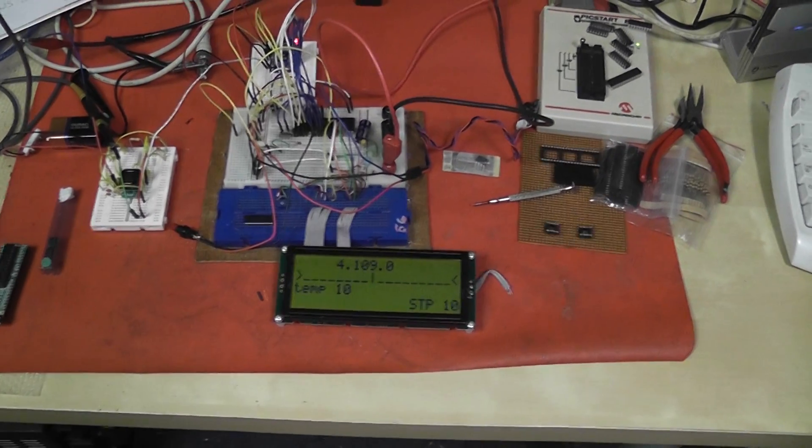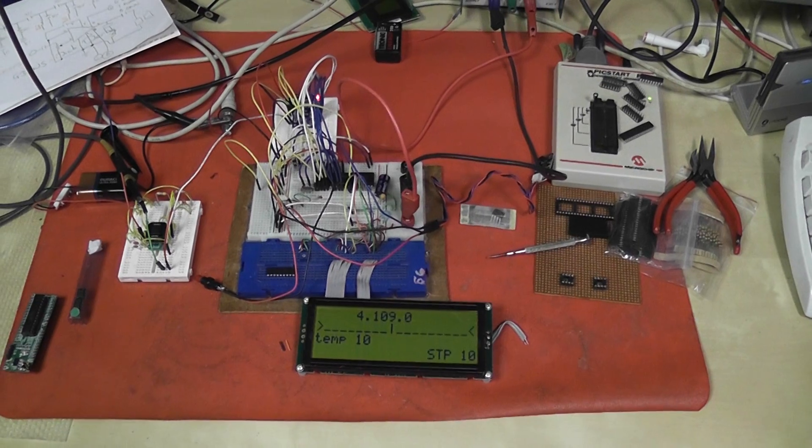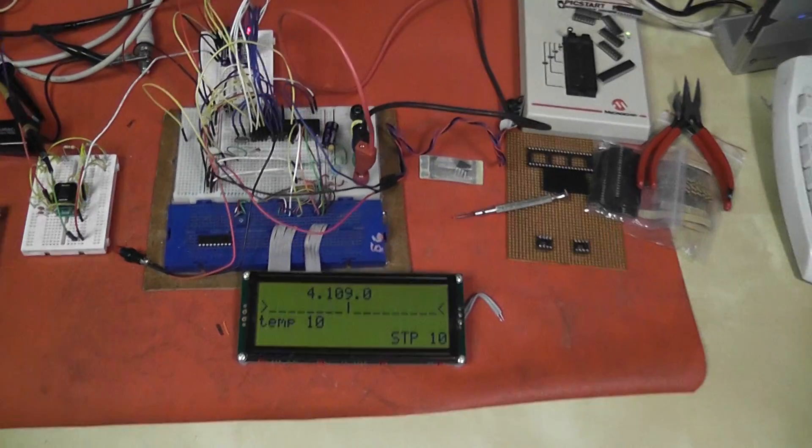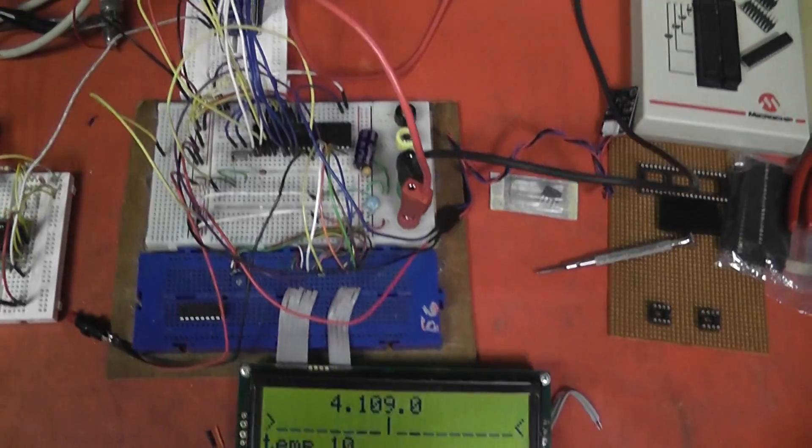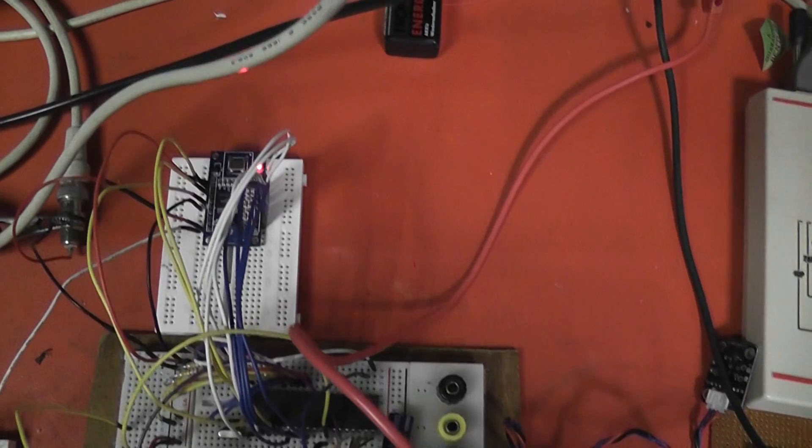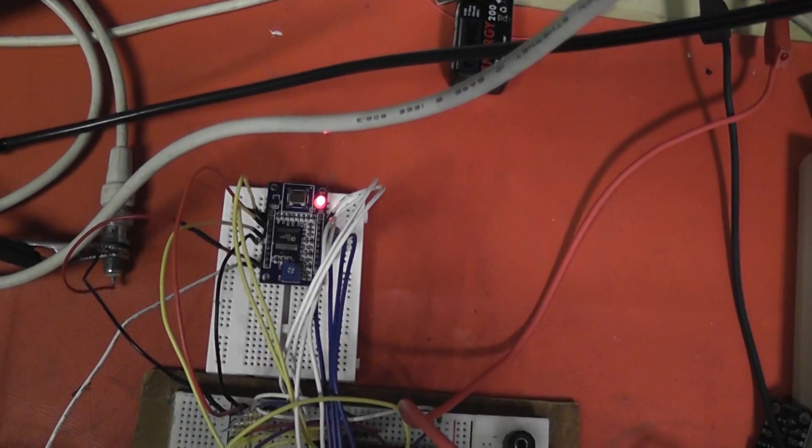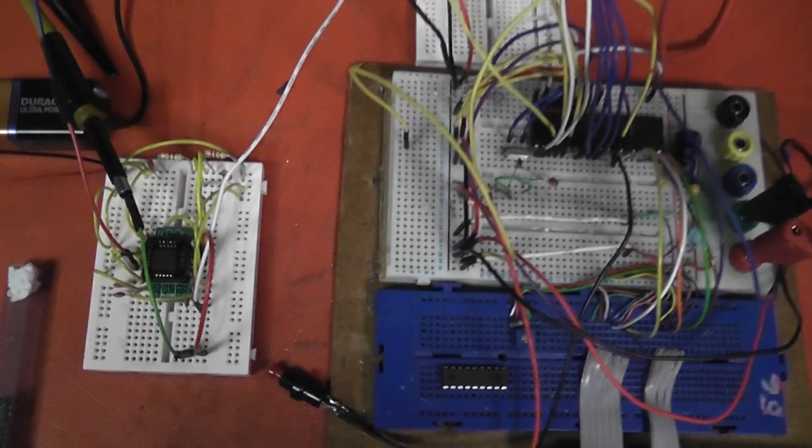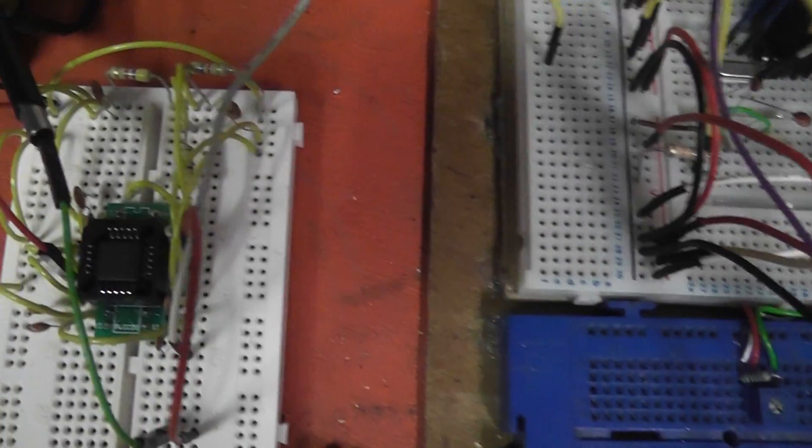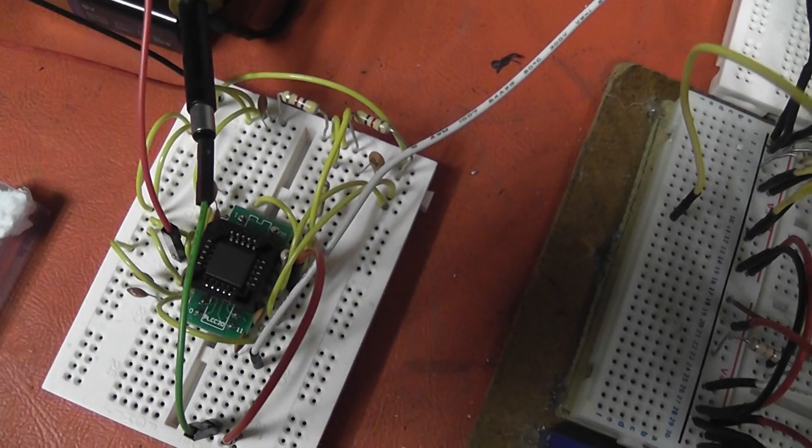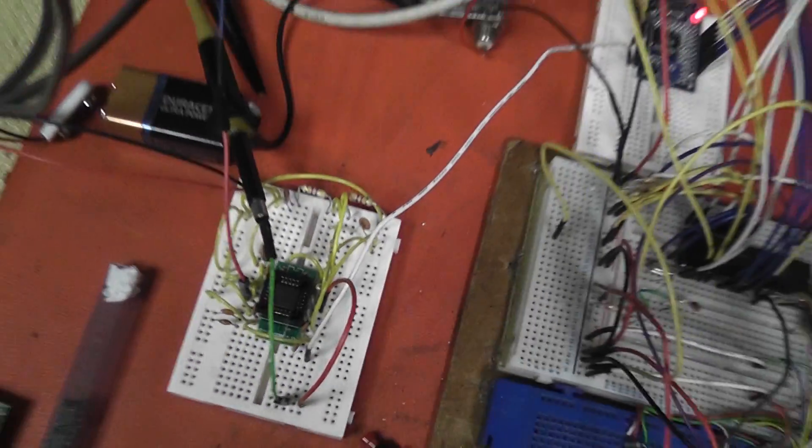Okay, this is some further developments of my 40 meter transceiver project. We've got the PIC there controlling the DDS, and the output of the DDS is coming to this mixer. This is an AD831 analog devices chip.